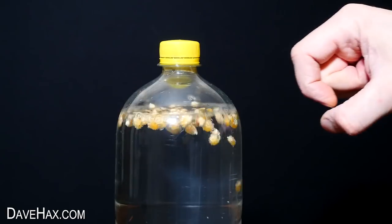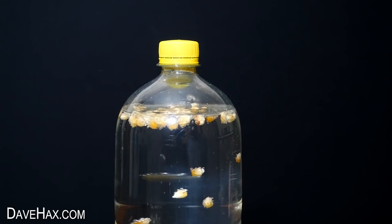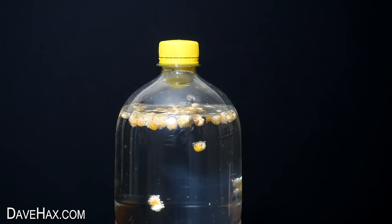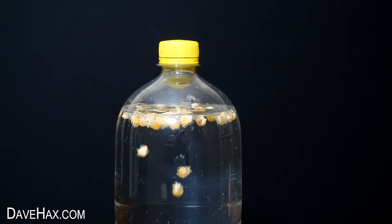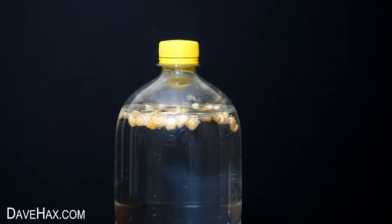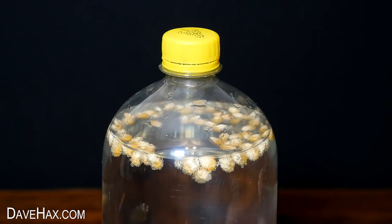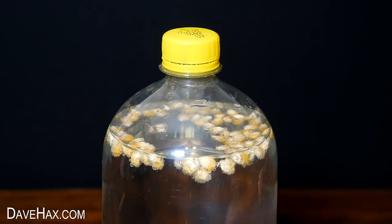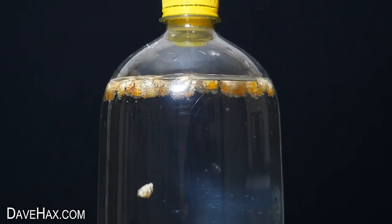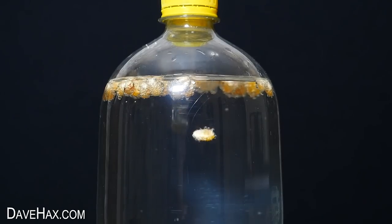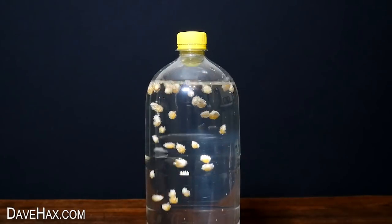You can even just flick the bottle and watch as they fall, then rise back up. After a while the bubbles holding the kernels up burst and they fall back down automatically before being lifted back up again. It's a bit like a homemade lava lamp, and it's a great project to do with kids.